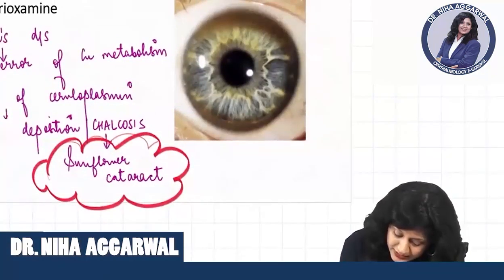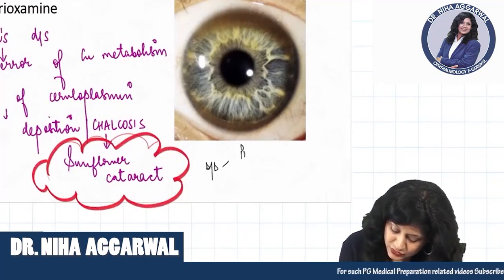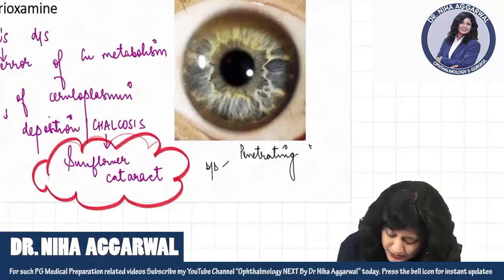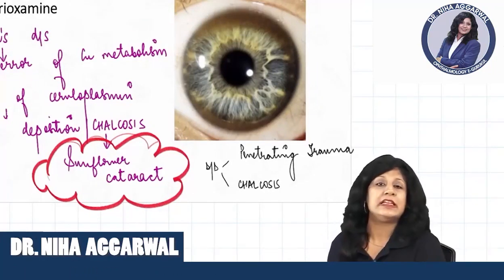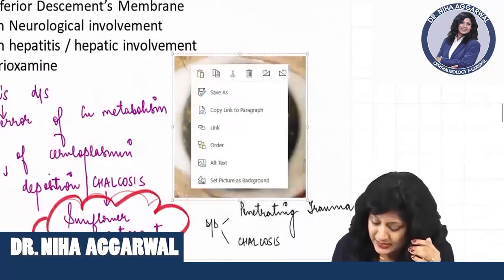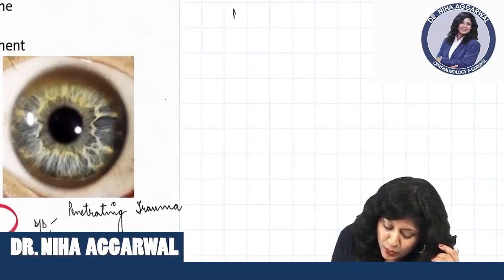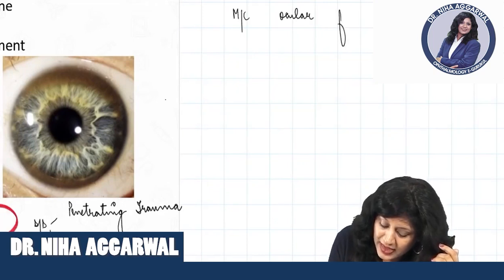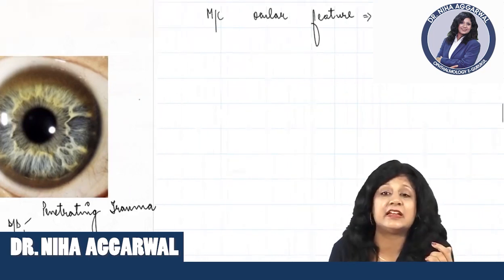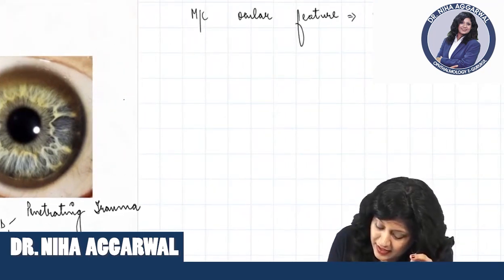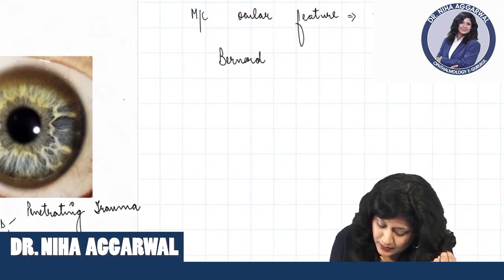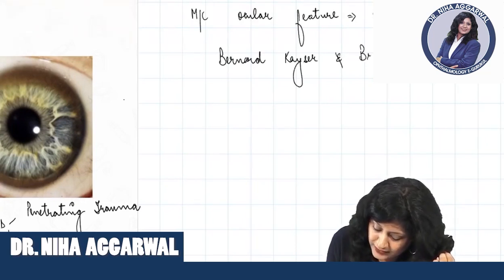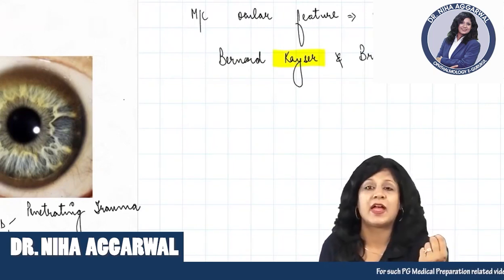What are the other causes of sunflower cataract? Other causes — if you look at the differential — we also have penetrating trauma, and then we have copper deposition in general; chalcosis in general can actually lead to the sunflower cataract. Now, though we are getting the sunflower cataract here, one thing worth mentioning is that the most common ocular feature of Wilson's disease is not the sunflower cataract — it is the KF ring only.